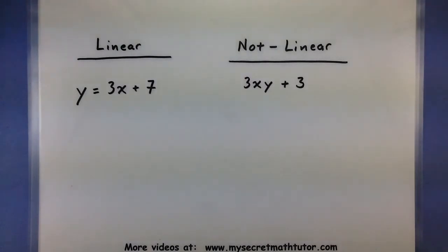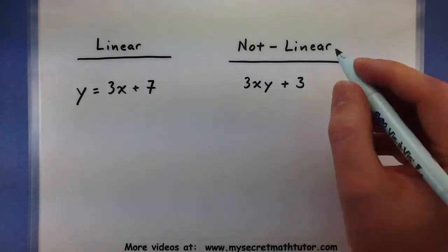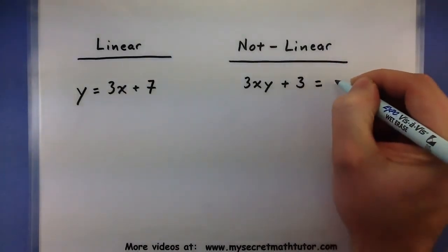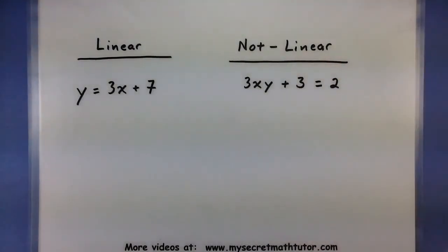Now, this looks very similar, but it's actually not a linear equation. Wait a minute. You're saying, how come this one's not a linear equation? Well, for starters, it doesn't even have an equal sign. Well, if I did put an equal sign, does that fix it? Unfortunately, not quite. Notice how we still have two variables that are being multiplied together. No good.